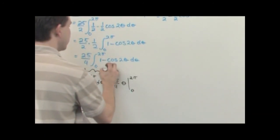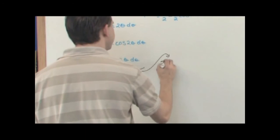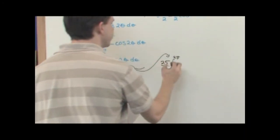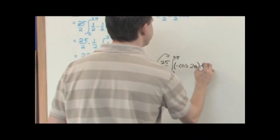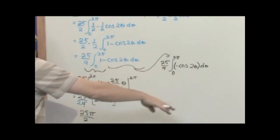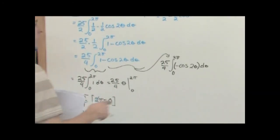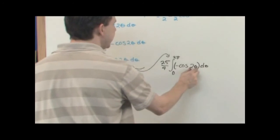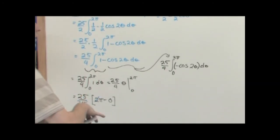Now let's do the other part, carrying the coefficient: 25 over 4 times the integral from 0 to 2π of negative cos(2θ) d theta. We're going to use substitution: u = 2θ, so du/dθ = 2, meaning d theta = one-half du. Rewriting: negative 25 over 4 times the integral from 0 to 2π of cos(u) times one-half du. We're going to take that one-half out, then integrate the cosine.